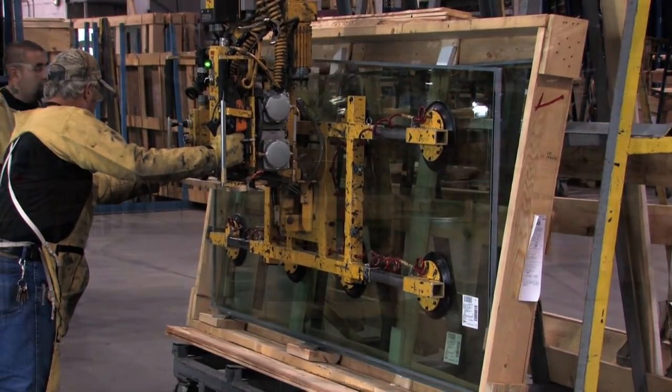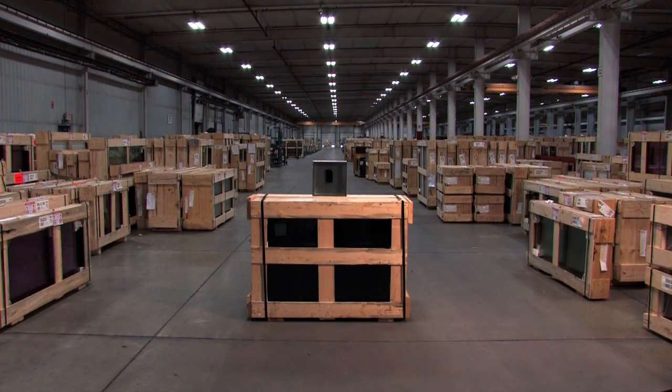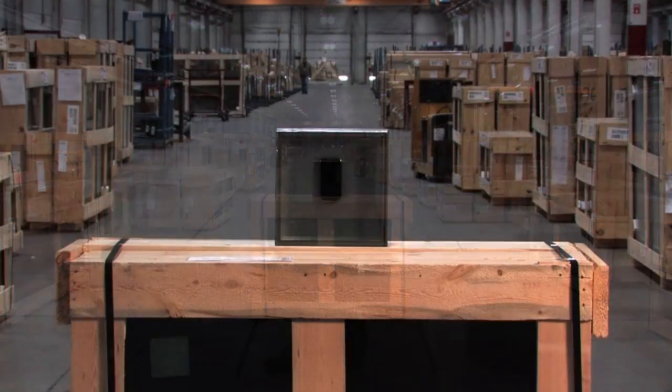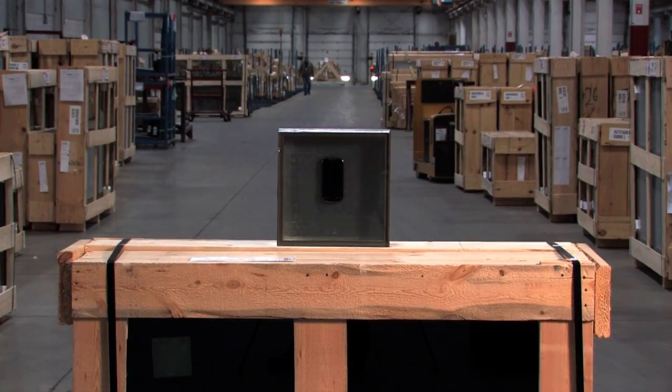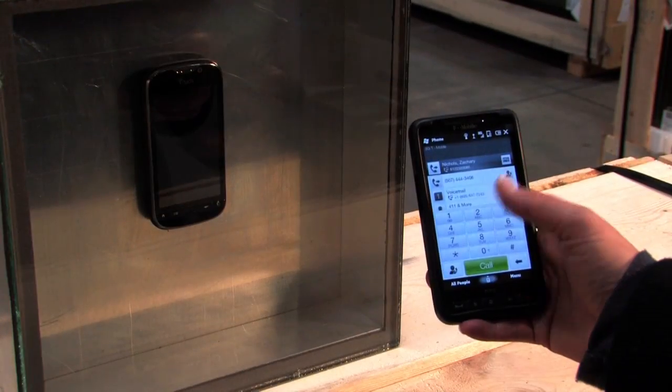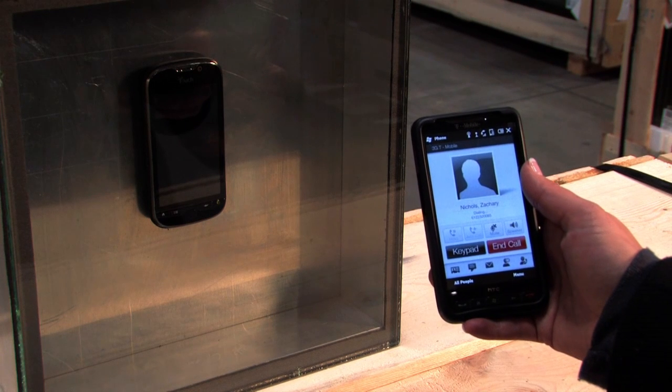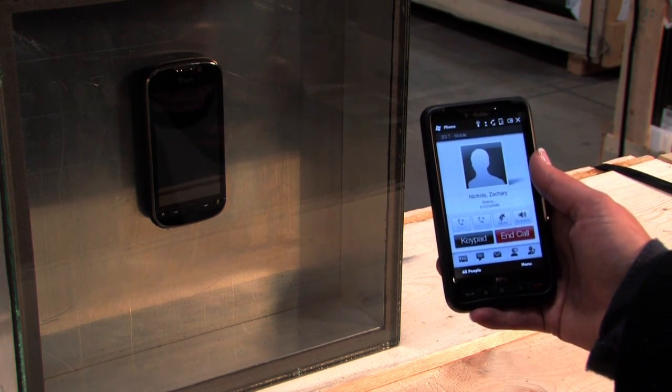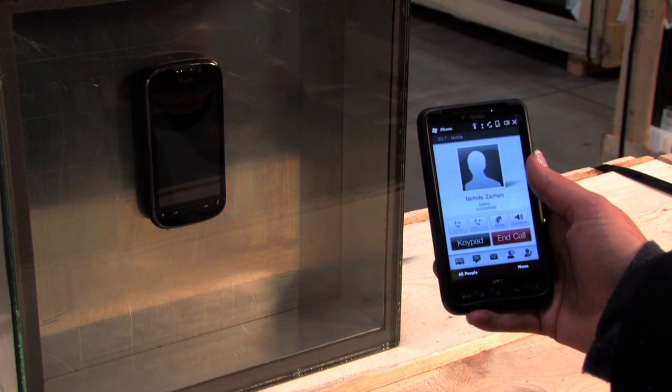To test the CyberShield product, we have built a simulation box that has been constructed from conventional framing materials that you might see on a glass facade. Our first example uses an ordinary clear piece of glass without a Datastop coating. We will dial the phone to demonstrate that the radio waves can be transmitted through an ordinary piece of glass.